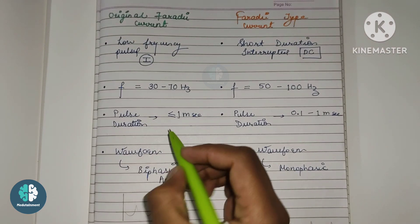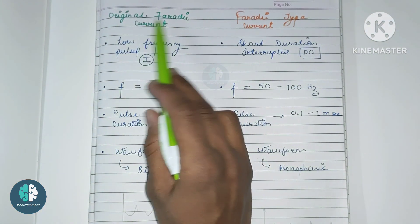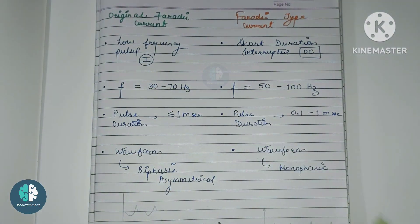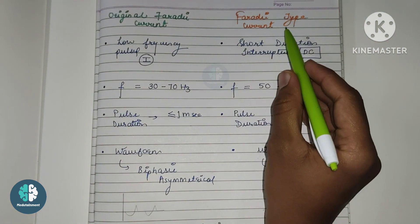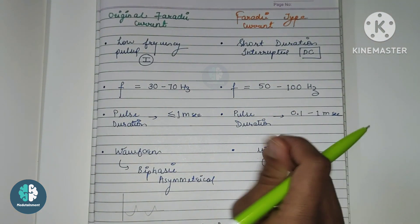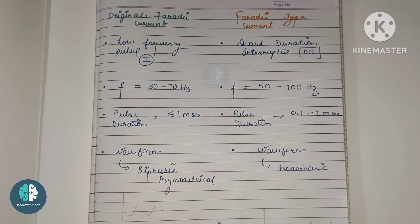Next we move on to pulse duration. The pulse duration for the original faradaic current was about 1 millisecond or less than 1 millisecond. For the faradaic type current, the pulse duration is 0.1 to 1 millisecond. The faradaic type is a short duration current, so the pulse duration is very small with a bandwidth of 0.1 to 1 millisecond.